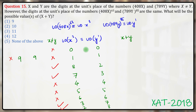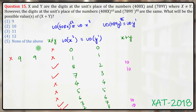Only 4 cases are acceptable: when y equals 2, 3, 7, or 8. The corresponding values of x plus y are 10, 10, 10, and 10. This means x plus y cannot take any value other than 10. Hence the answer is 10.